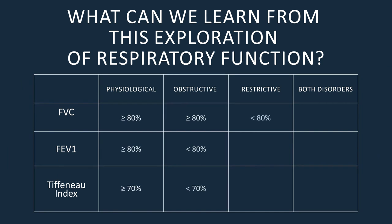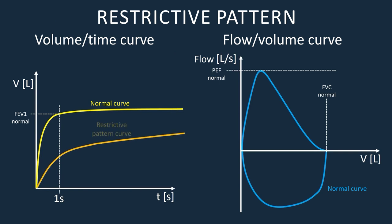So the FEV1 is expected to be lower than the reference value for this patient. With regard to the Tiffeneau index, it may not change or even have a higher value than expected because in a restrictive disorder the decrease in vital capacity is usually more pronounced than that of FEV1. This graphic shows the volume-time and flow-volume curves of a restrictive disorder and the parameters that are affected.